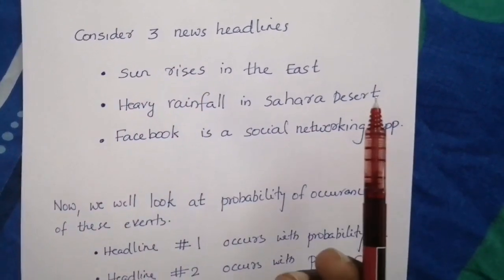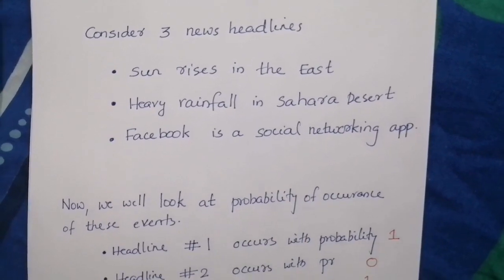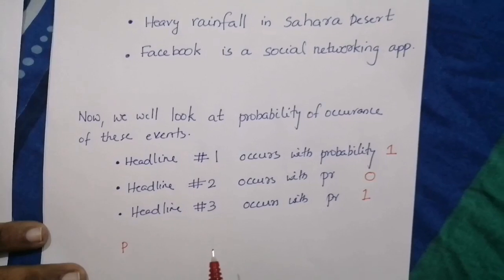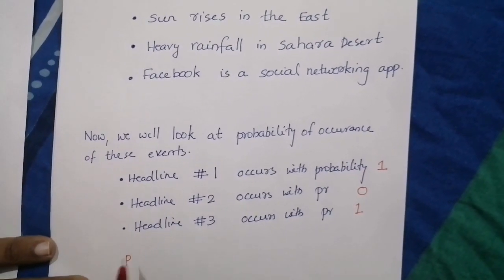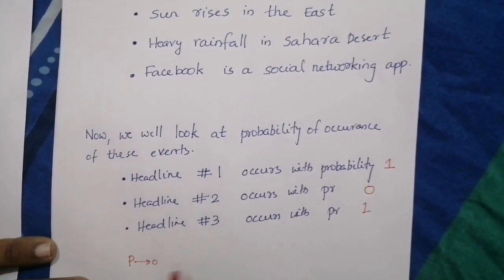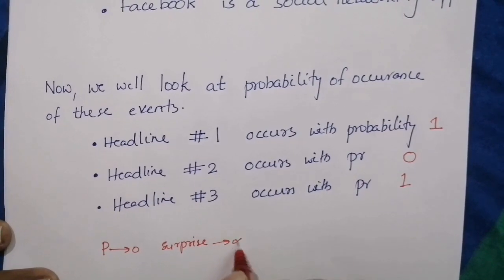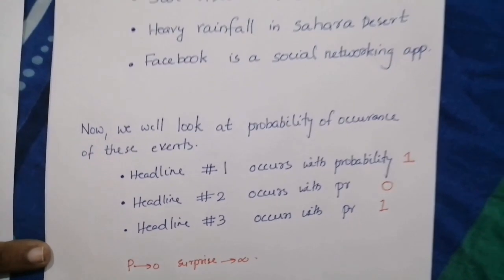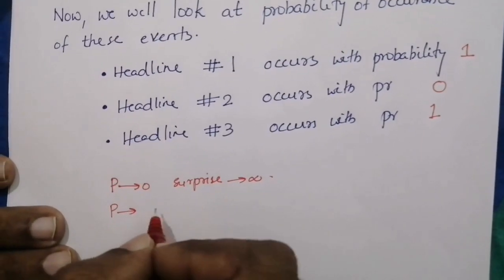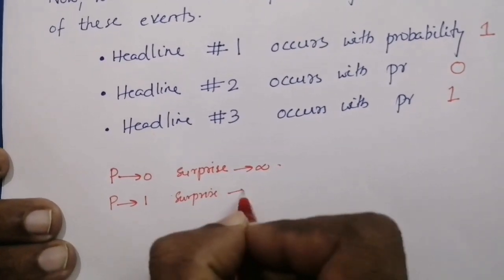The first headline has no surprise while the second headline has higher surprise. So we can say that the probability of occurrence of an event is inversely related to surprise — as probability of occurrence of an event tends to zero, the surprise tends to infinity, while as probability of occurrence tends to one, surprise tends to zero.